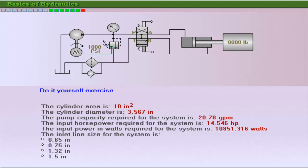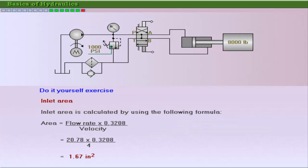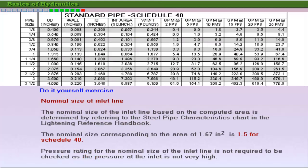The area of the inlet line is calculated in order to determine its nominal size. Refer to the steel pipe characteristics chart in the Lightning Reference Handbook to determine the nominal size of the inlet line. The nominal size for the inlet line corresponding to the computed area of 1.67 square inches is 1.5 for schedule 40.